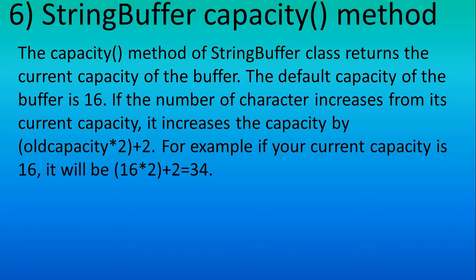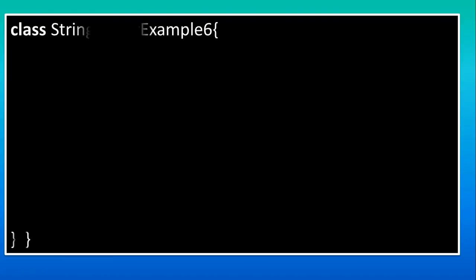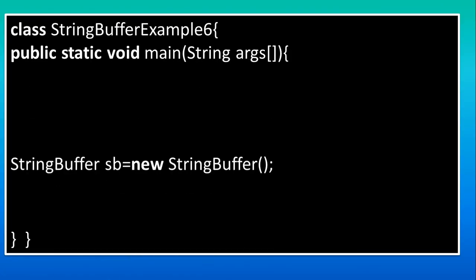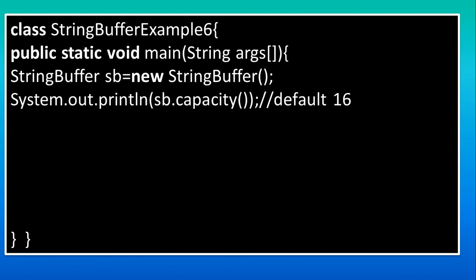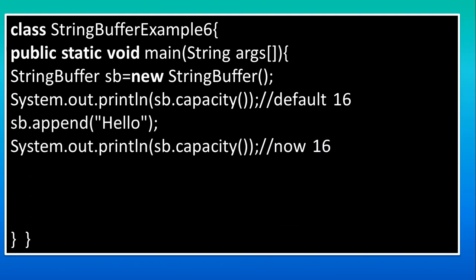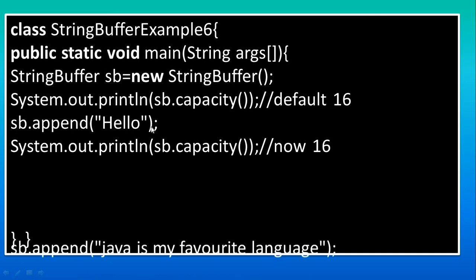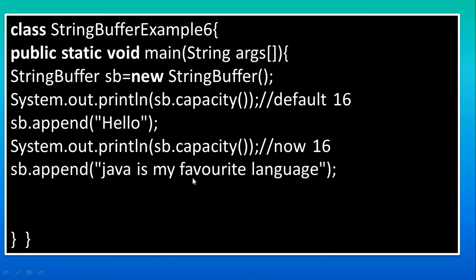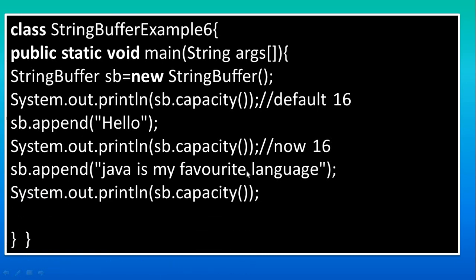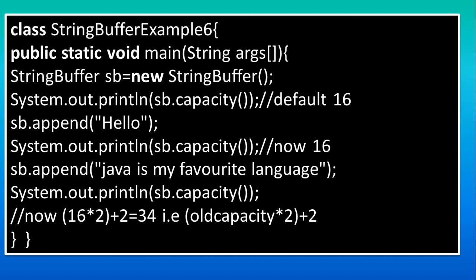For example, if the current capacity is 16, it will be changed to 34. So our next capacity is 34. This means if you add a 17th character, the capacity will be approximately doubled plus 2 extra. Here in the program, if you use the capacity() method on a new StringBuffer, the result is 16 because the default capacity is 16. If you then add 'Hello' and check capacity again, it still gives 16 since we only have 5 characters. But if you add more characters beyond 16, the capacity becomes 34 because of the formula: 16 × 2 + 2 = 34.